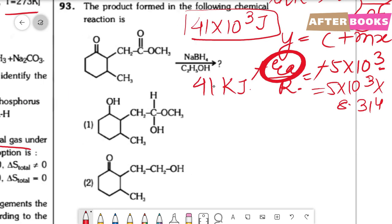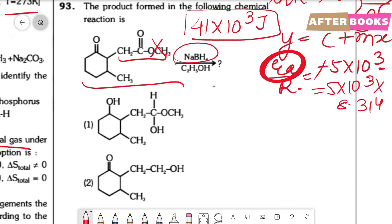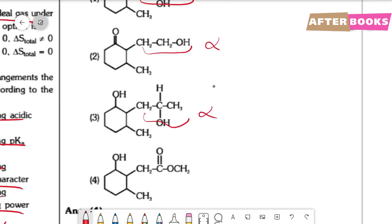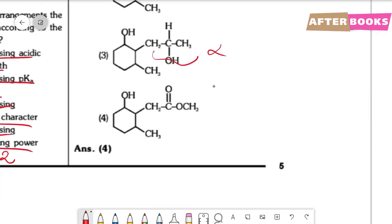Question number 93. NaBH4 (sodium borohydride) is used — it performs selective reduction, reducing ketone groups but not ester groups. Options showing ester reduction are incorrect. The correct option is option 4, where only the ketone group is reduced and the ester group remains intact.